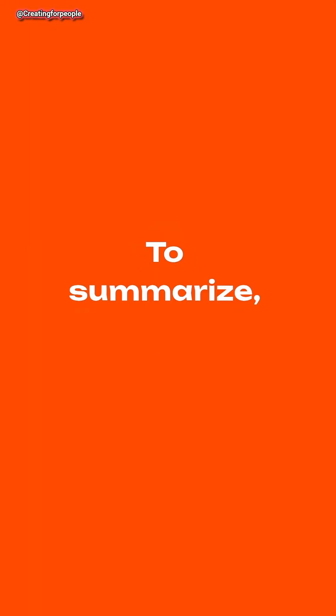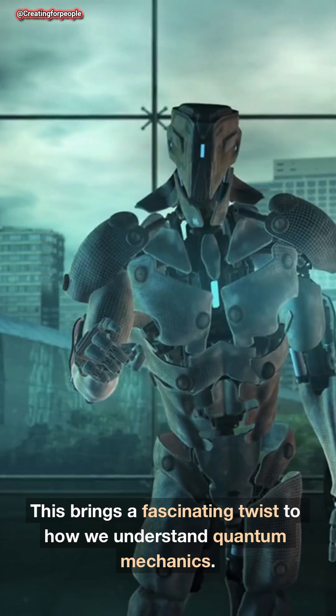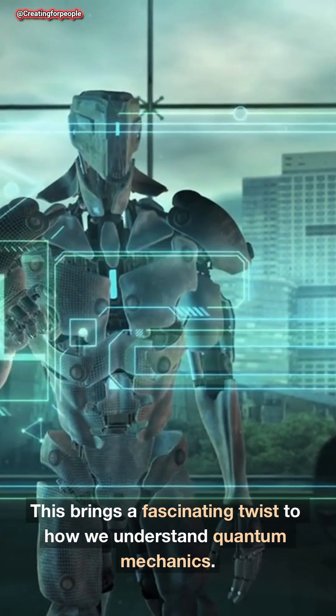To summarize, the quantum Zeno effect shows how observation impacts change. Observing can freeze a system in time. This brings a fascinating twist to how we understand quantum mechanics.